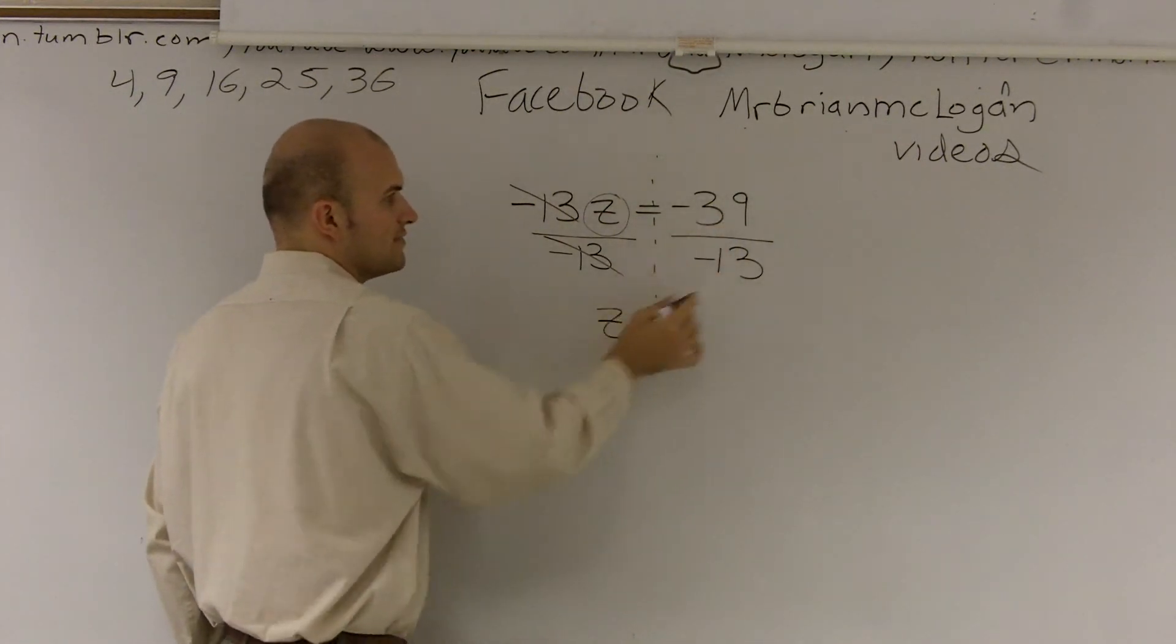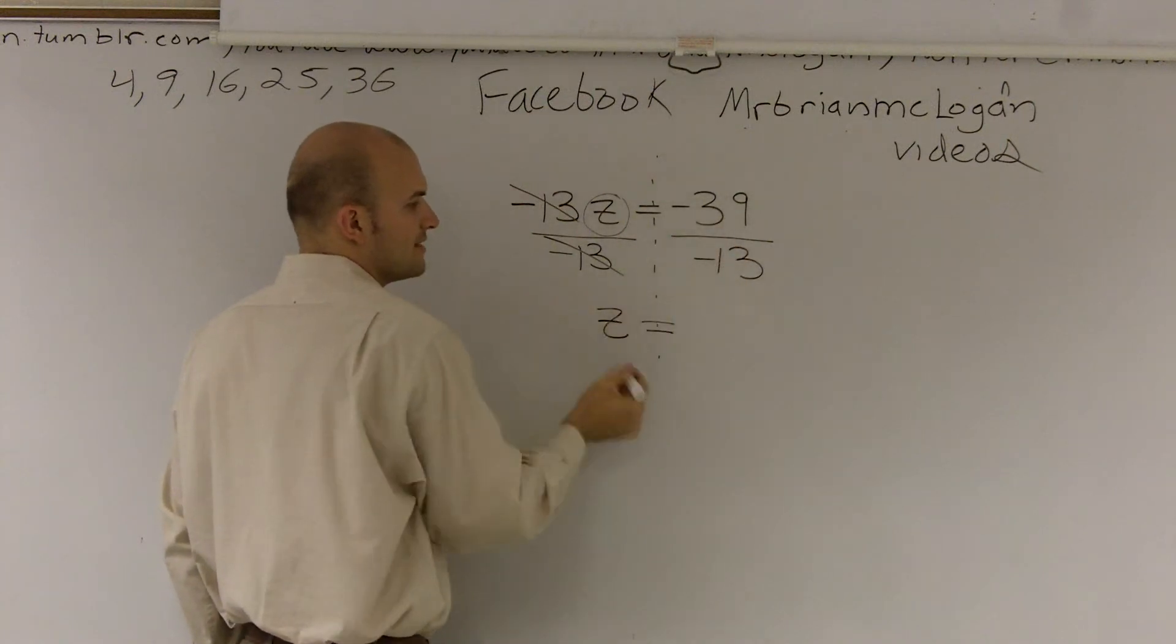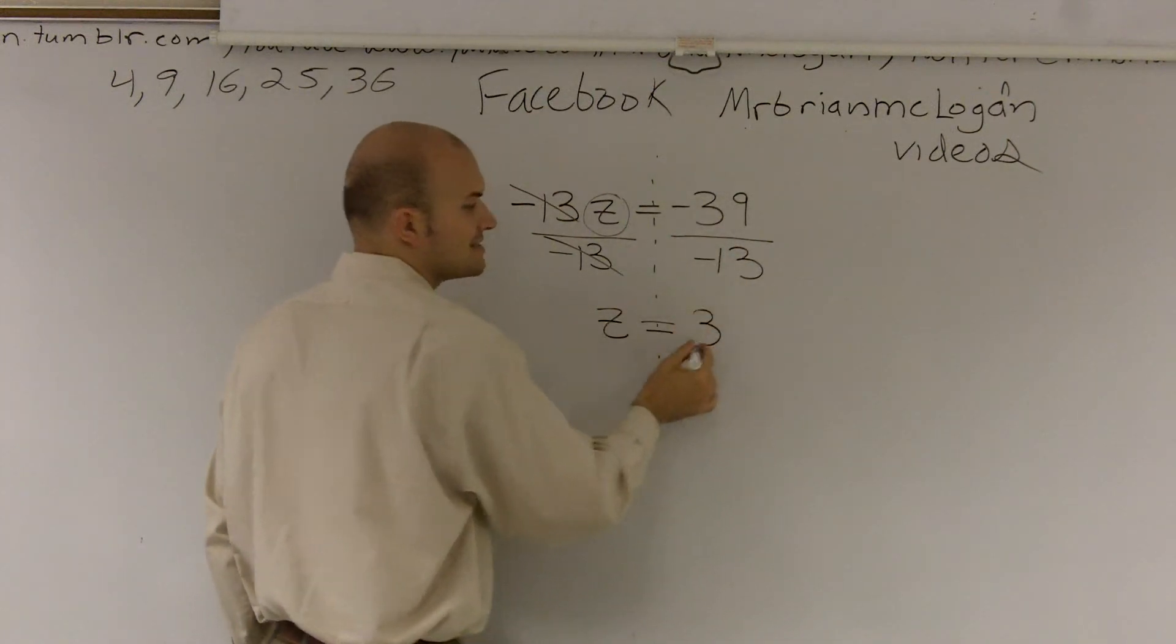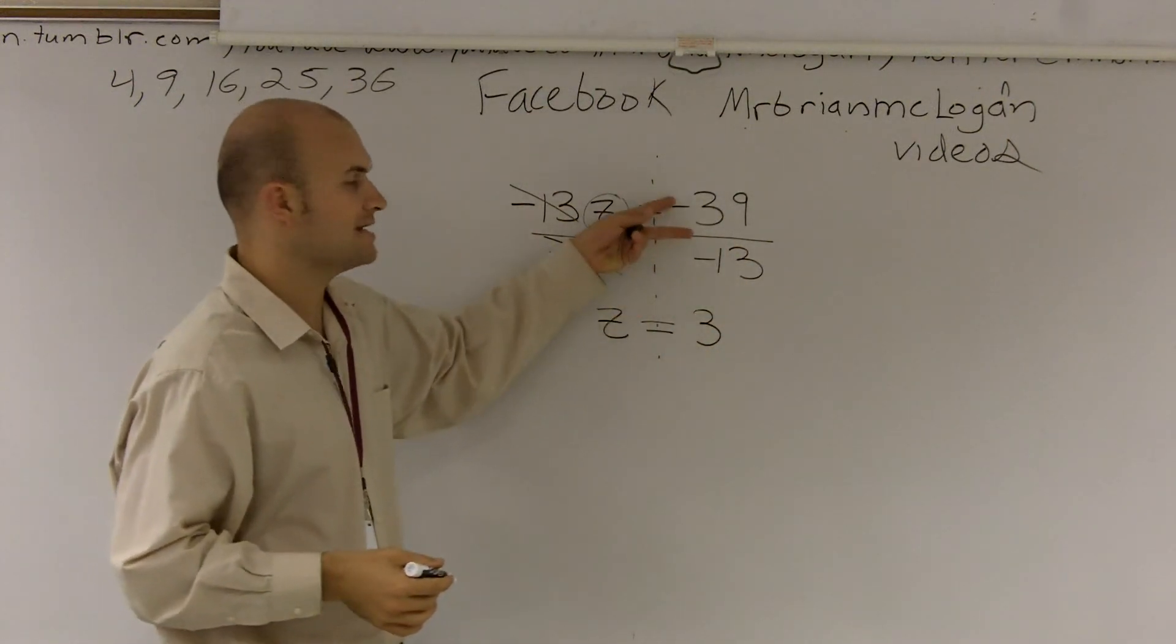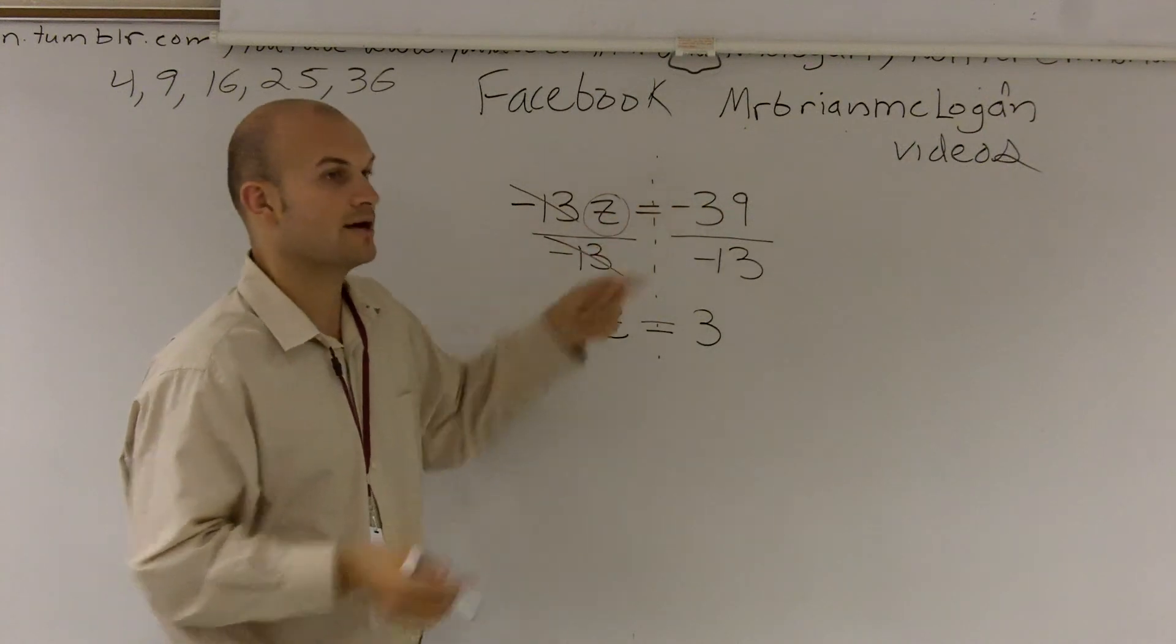Equals, well, negative 39 divided by negative 13 gives you a positive 3. Make sure that the negatives, two negatives, cancel out. Yes, question.